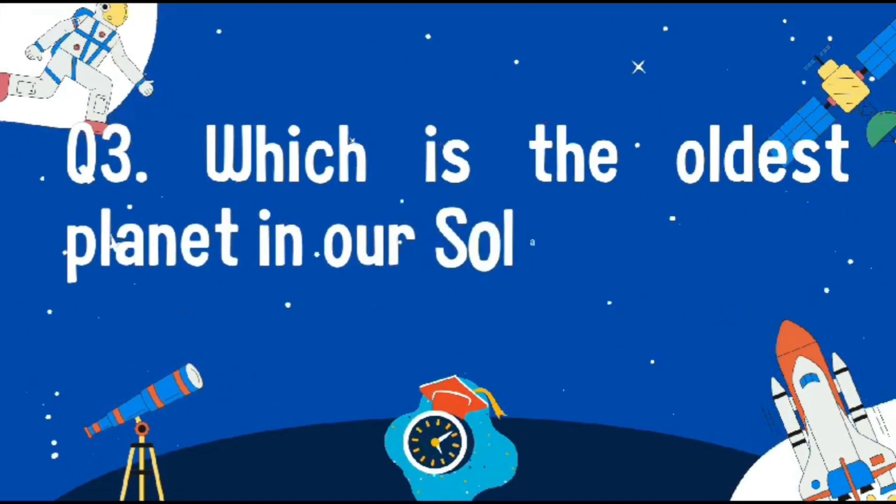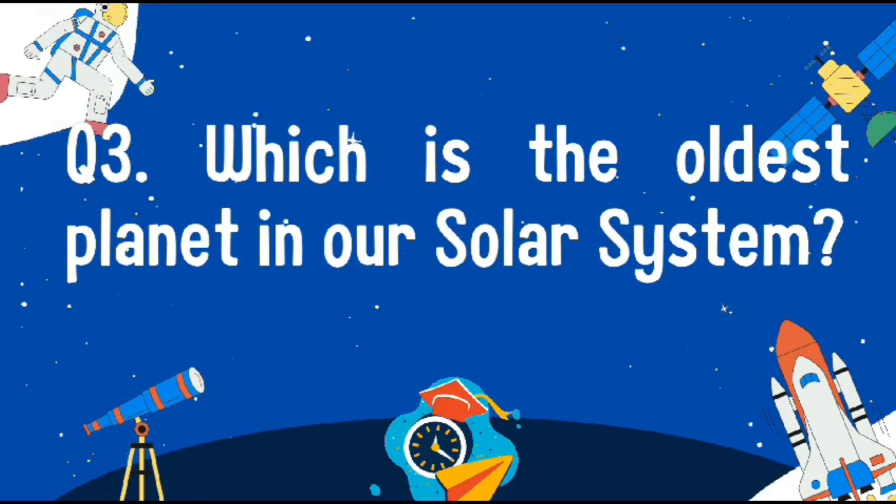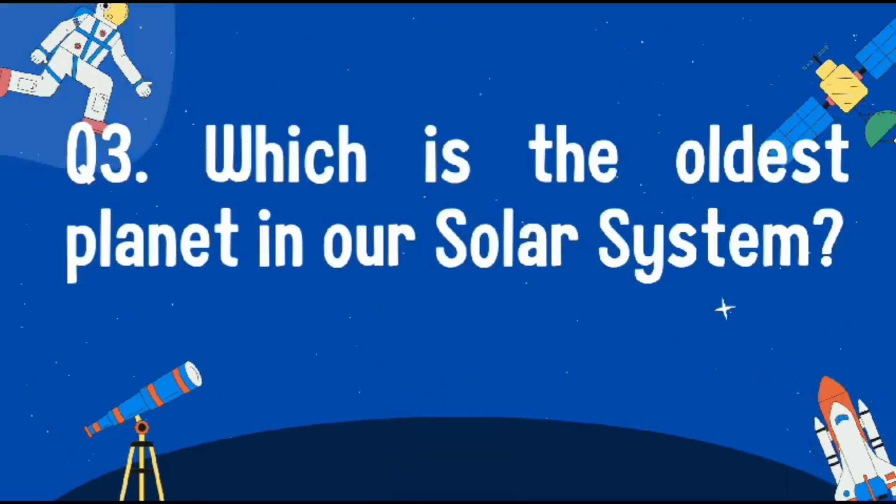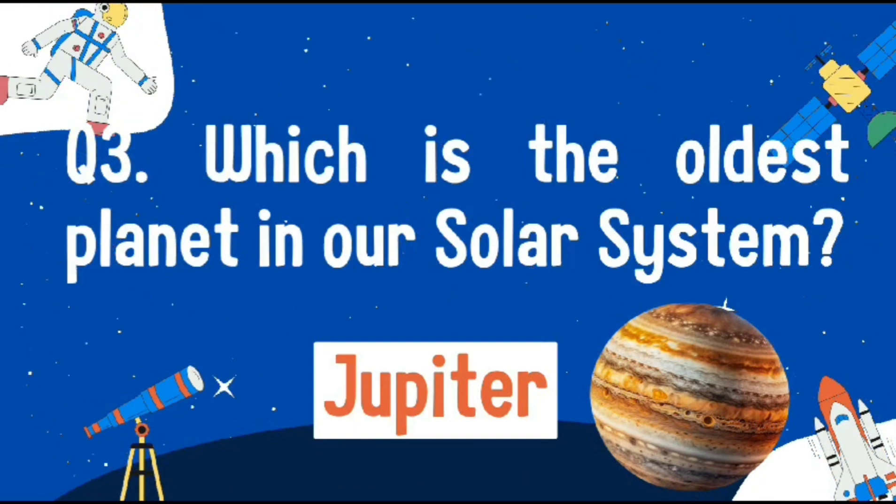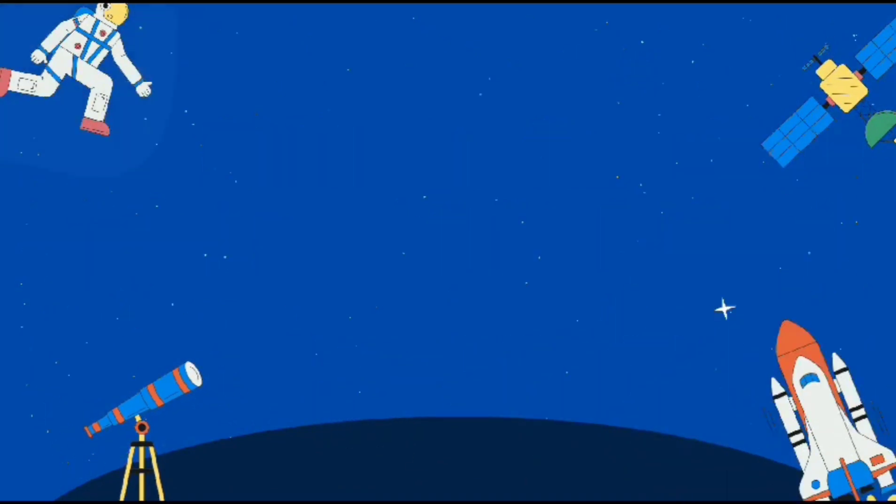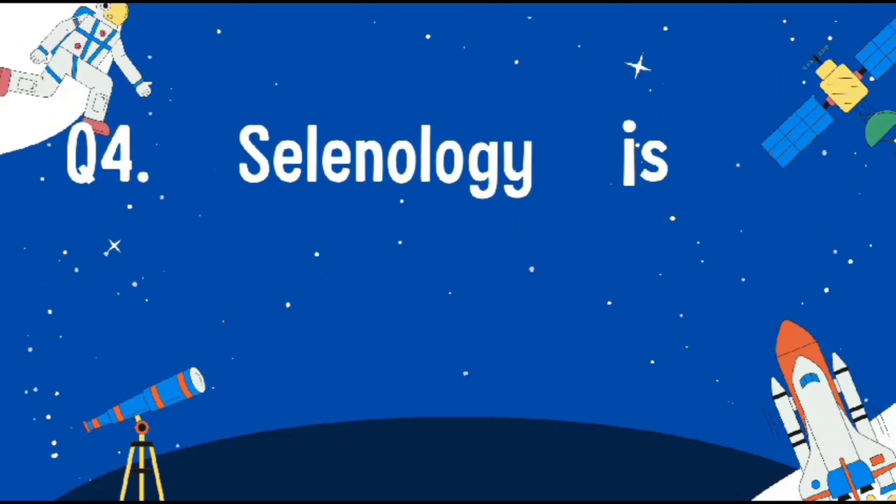Which is the oldest planet in our solar system? The oldest planet in our solar system is Jupiter. Selenology is...